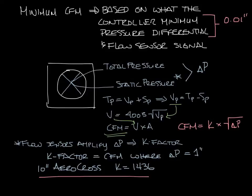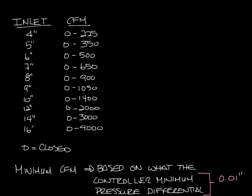Now let's calculate the minimum CFM of this 10 inch box that has an arrow cross in it. The CFM is the K factor 1436 times the square root of 0.01 which is 143.6 CFM. I think our catalog says 145 because we rounded up. So let's go back to the top and put in our minimum CFMs based on the inlet size.